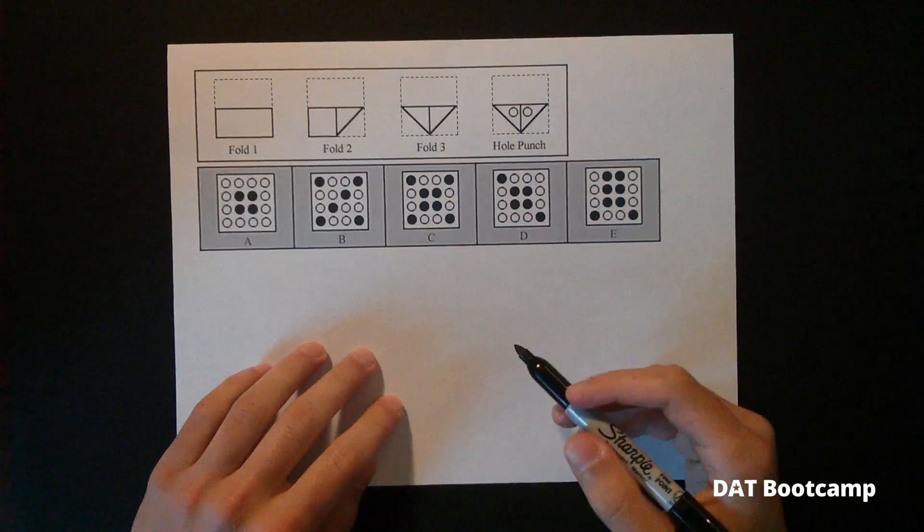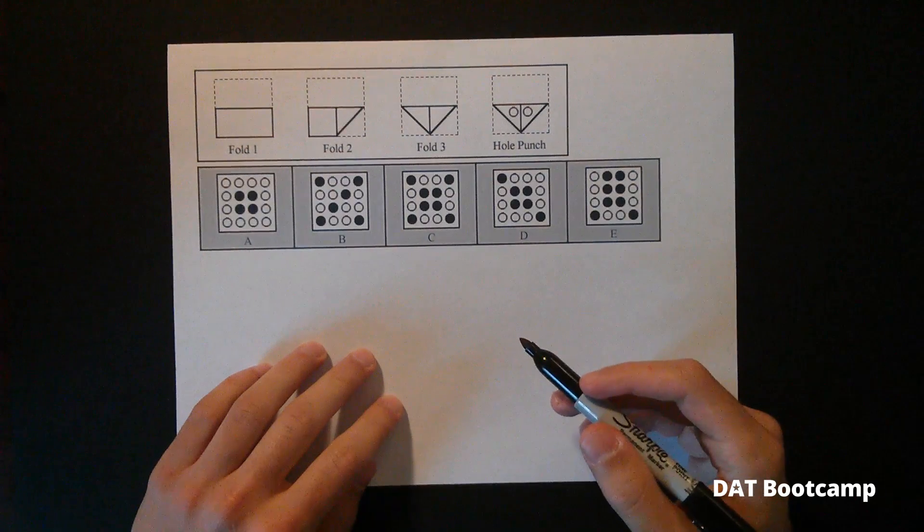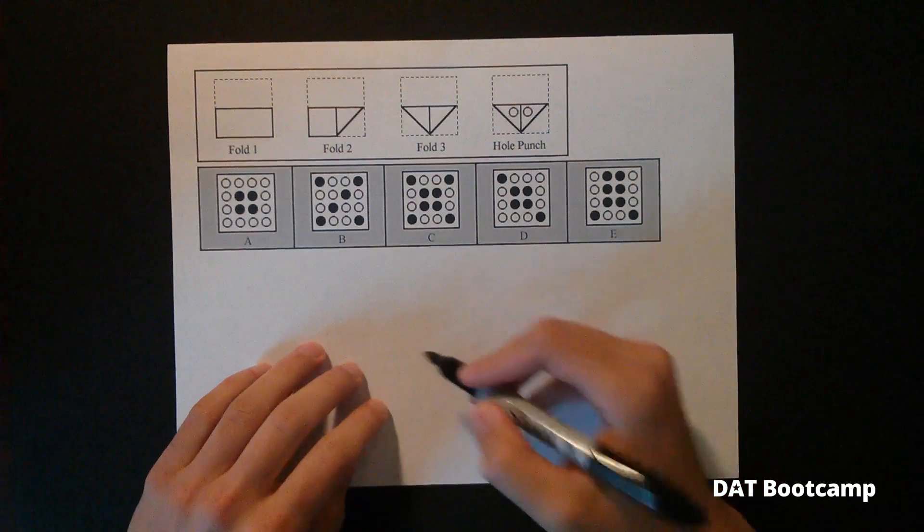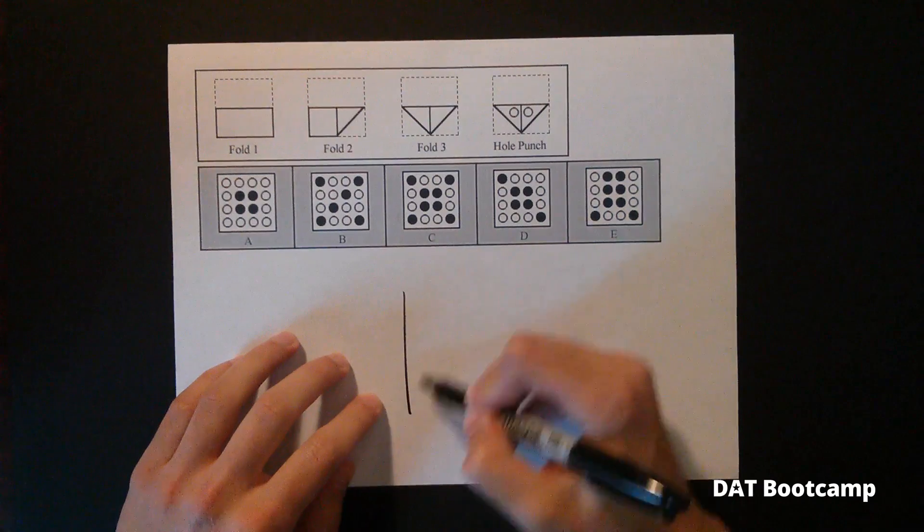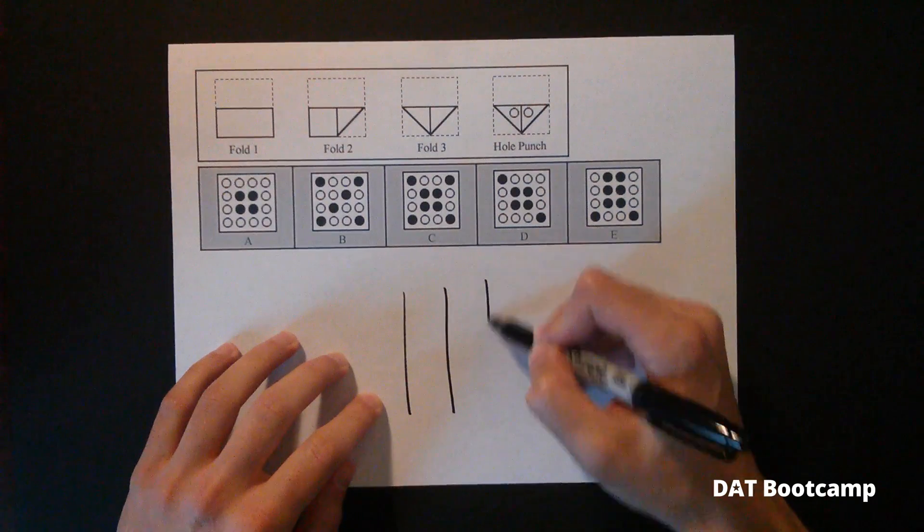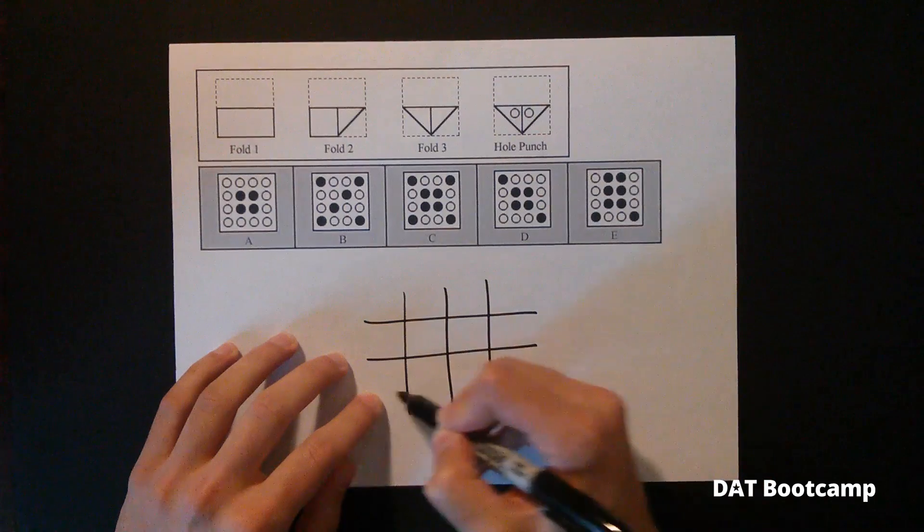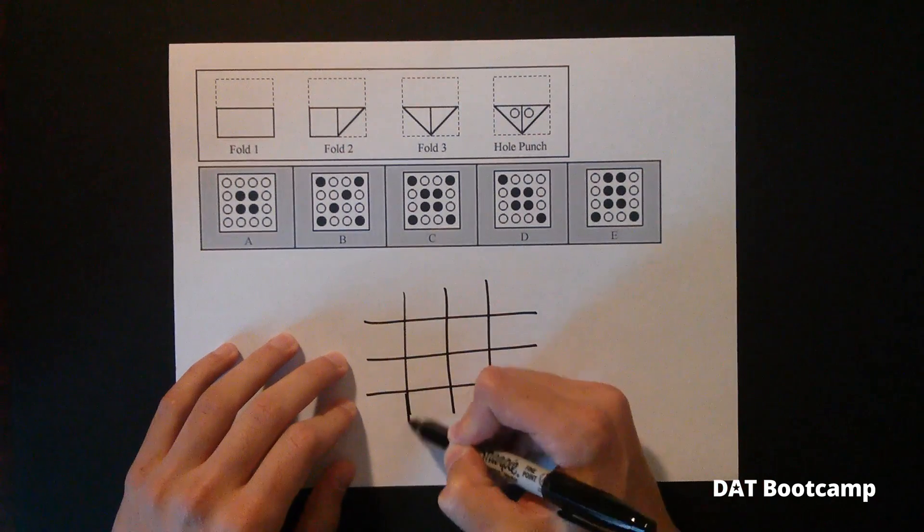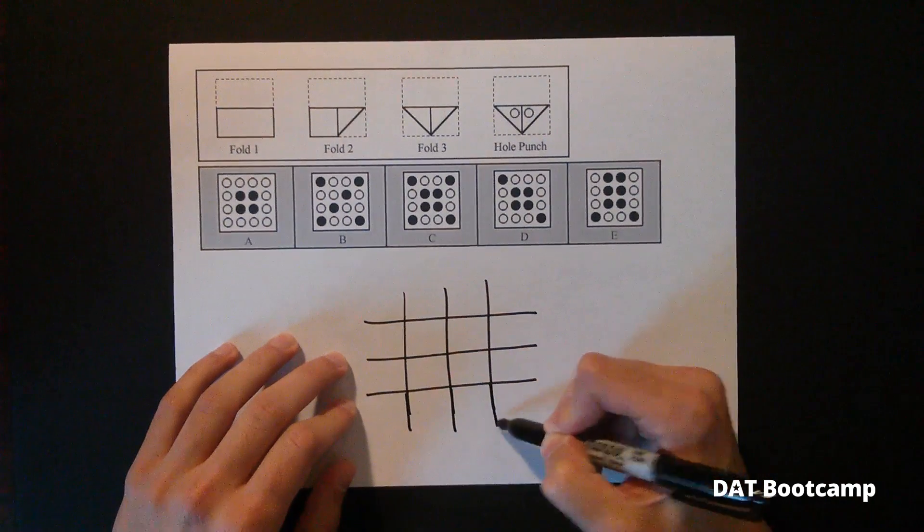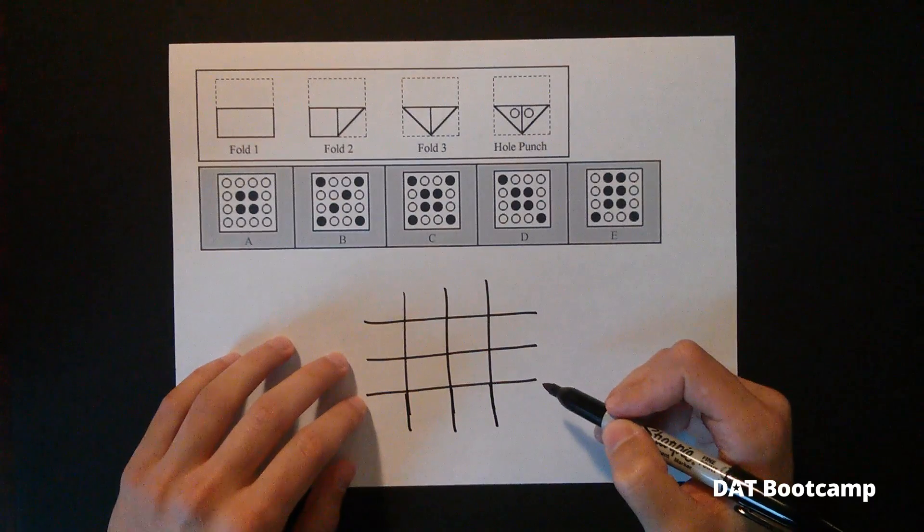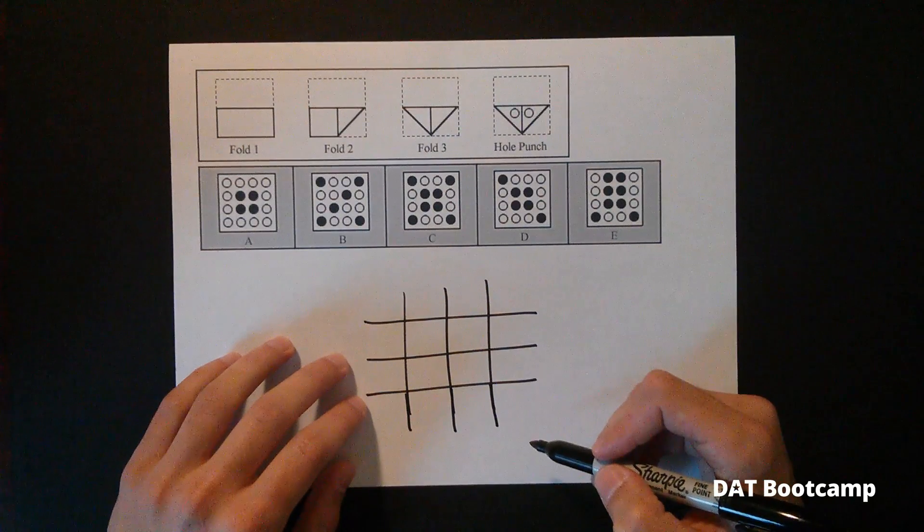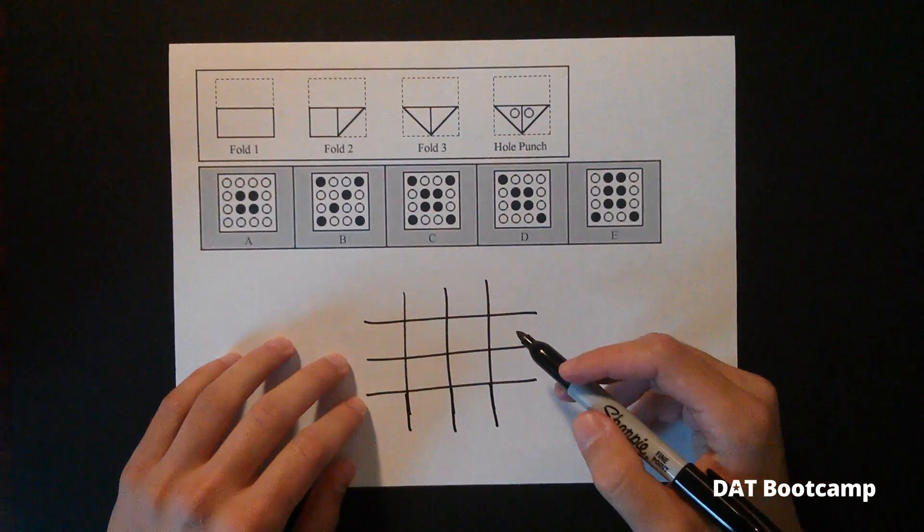All right. So on the real DAT, you won't have sticky notes and a hole puncher. So we're going to use something called the grid method. We're going to create a four by four grid. It kind of helps you because you actually get gridded paper in the prometric test centers.